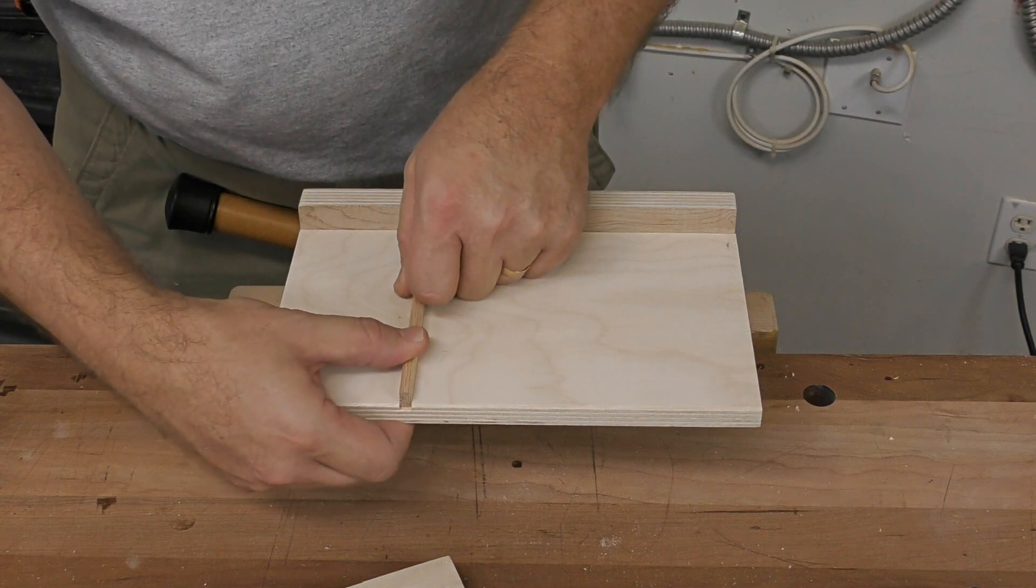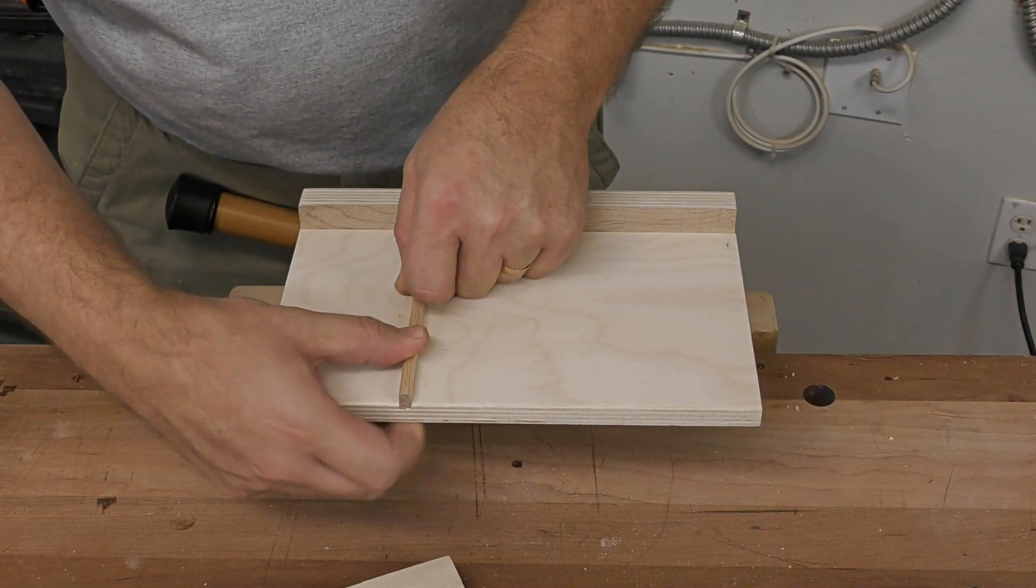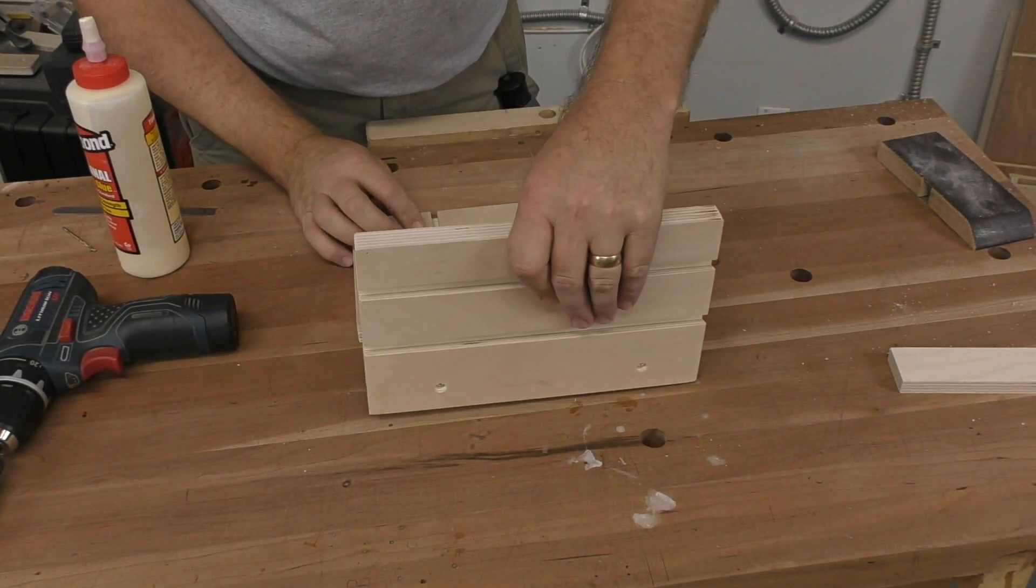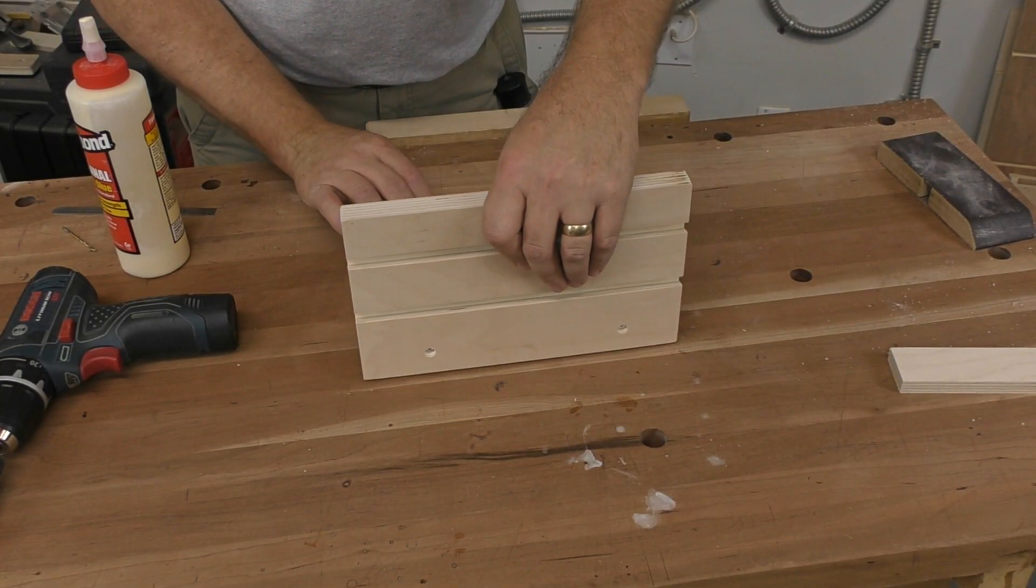The hardwood runner is glued into the groove on the bottom of the slide. This runner locates the vertical fence assembly onto the base.